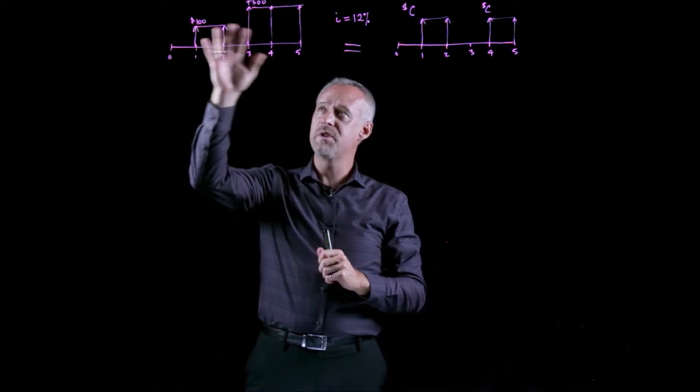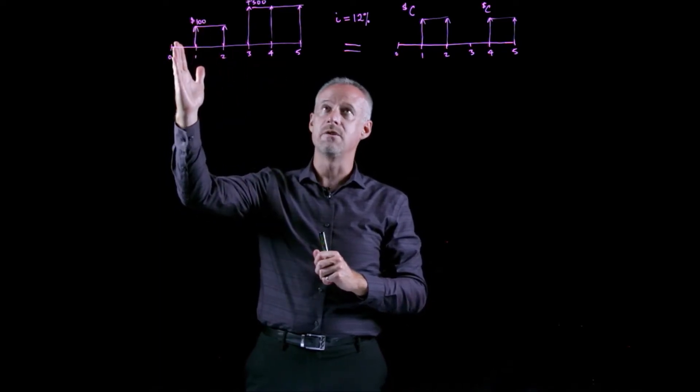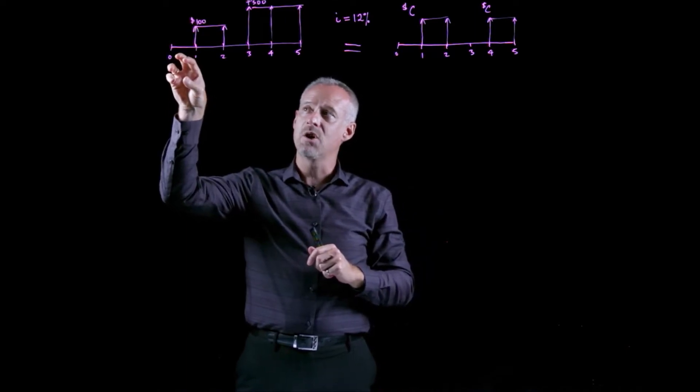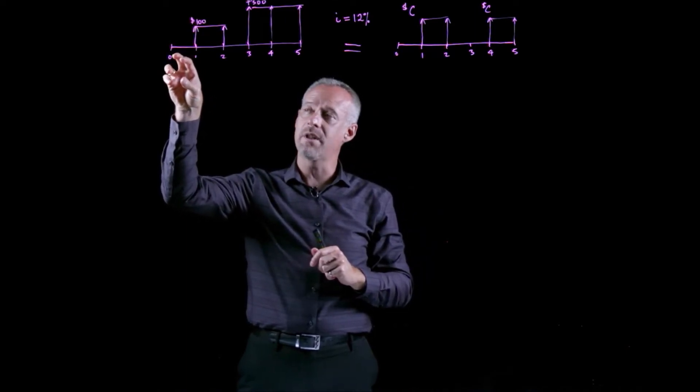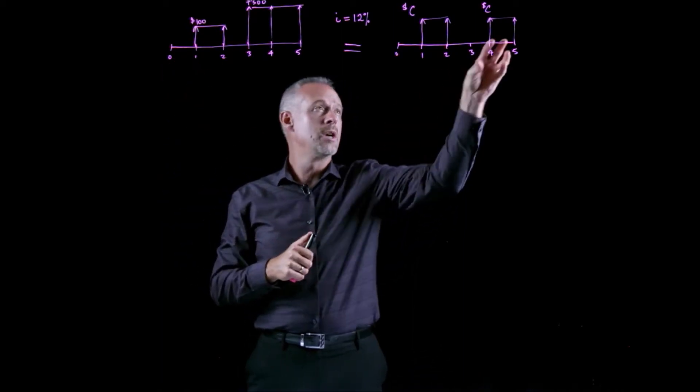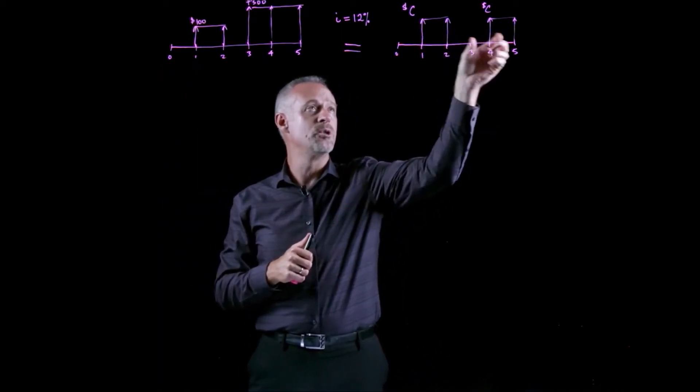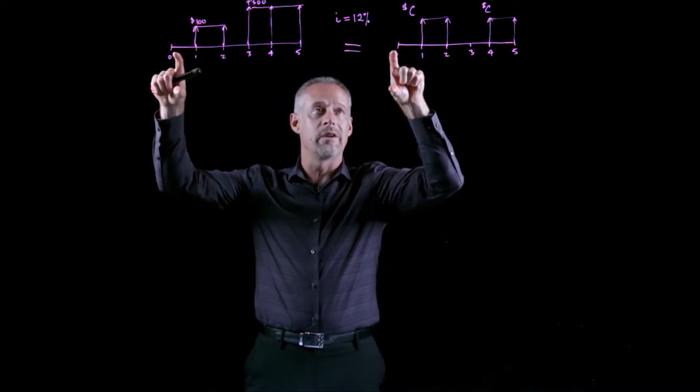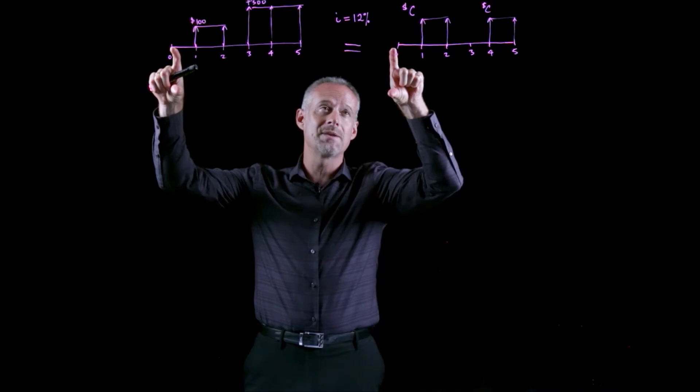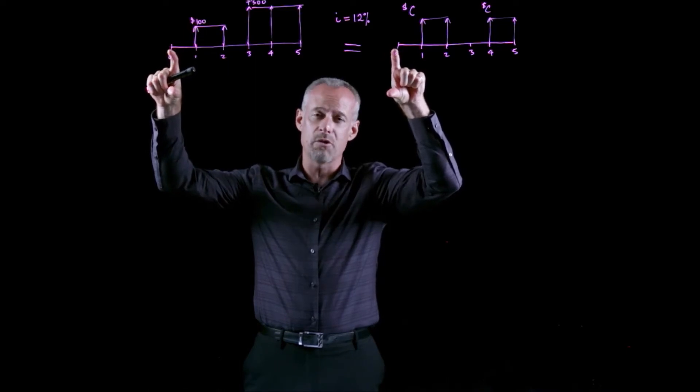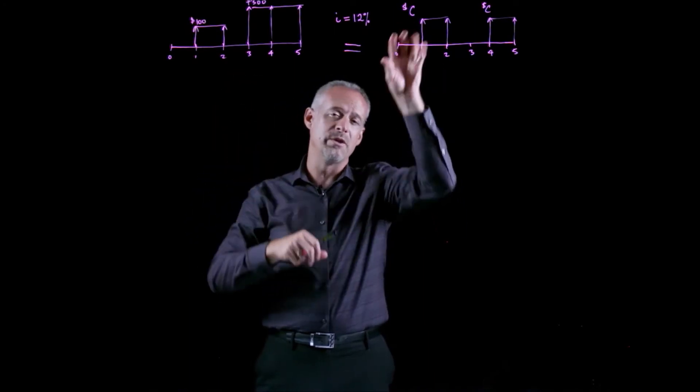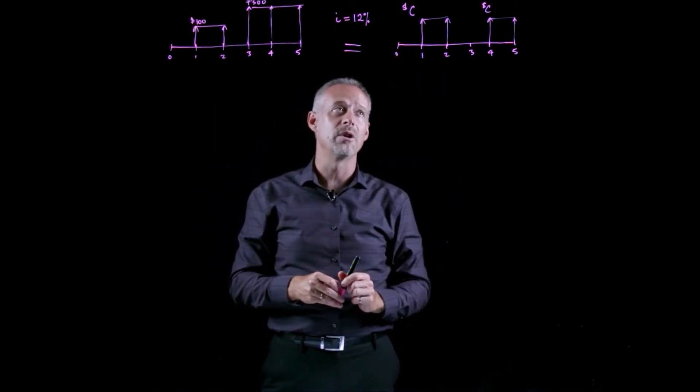If I move these cash flows back to the present, using an interest rate of 12%, I can then compare that value or set that value equal to the present value of these two unknown cash flows. I can also bring these cash flows back to the same time. If I bring them back to the same time, I can set them equal, of course using all of the correct techniques for time value of money, and hopefully solve for the value of C.